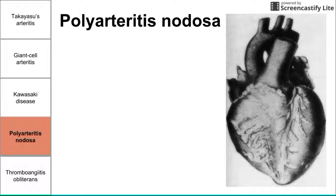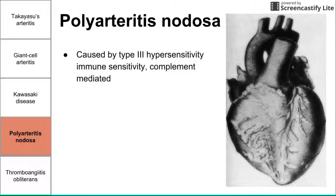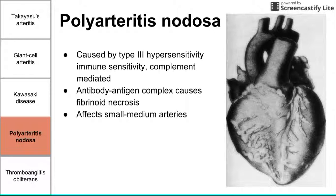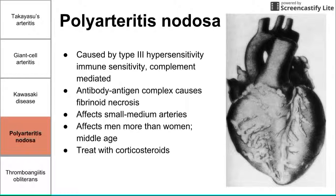The next disease is polyarteritis nodosa. This one is caused by type 3 hypersensitivity, a complement-mediated hypersensitivity involving neutrophil formation and complement protein activation. It is triggered by antibody-antigen complexes circulating through the vasculature, causing fibrinoid necrosis. It affects small to medium arteries and affects men more than women, particularly middle-aged men. Treatment is corticosteroids, and we can see heart tissue with necrosis and occluded vessels due to the fibrinoid necrosis.